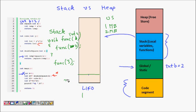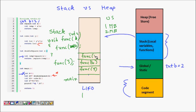If main calls func(3), and func calls itself with 2*x = 6, which calls itself with 12, then 24, then 48, then 96, and so on — it keeps recursively calling itself, each time doubling the value and pushing a new frame onto the stack.